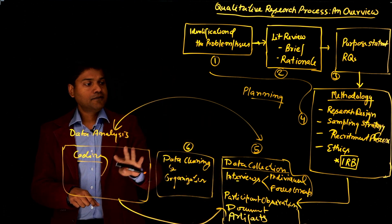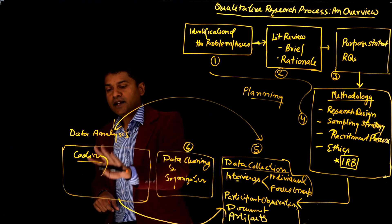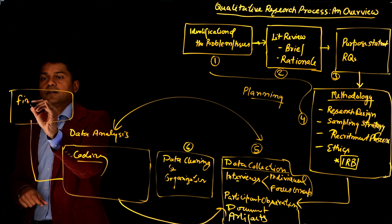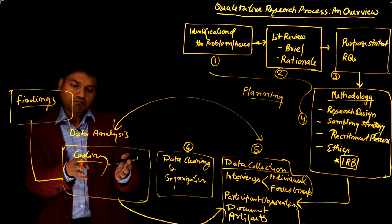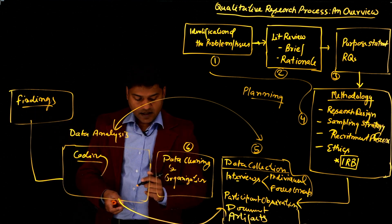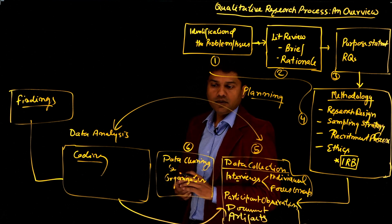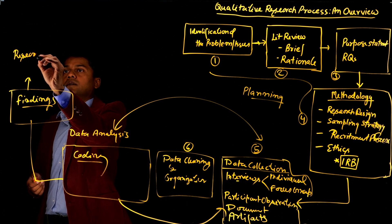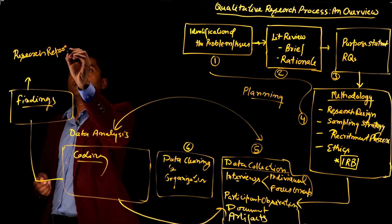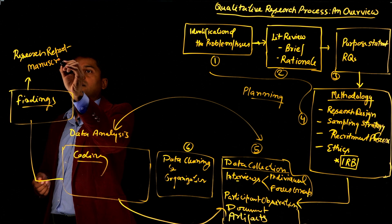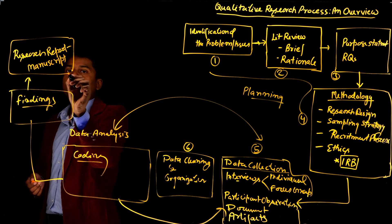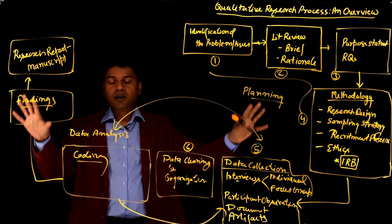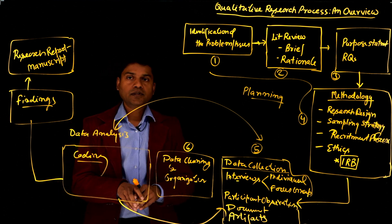Once you have completely finished your data collection and data analysis, the next step is your findings. Based on your data analysis, you come up with the findings. Then, based on whatever findings emerged from your data, you write your research report or manuscript that you submit for publication in a research journal. That's briefly the overview of a qualitative research project.